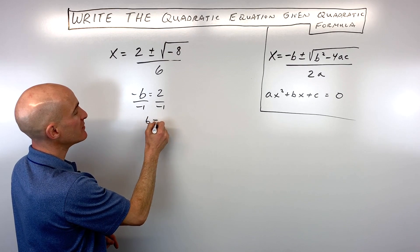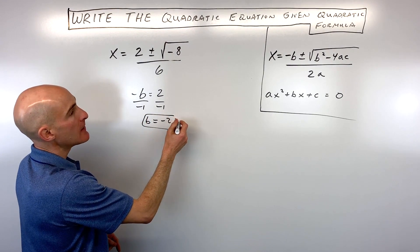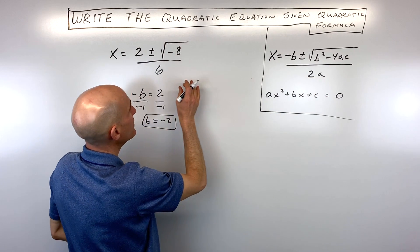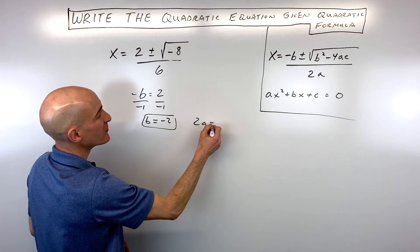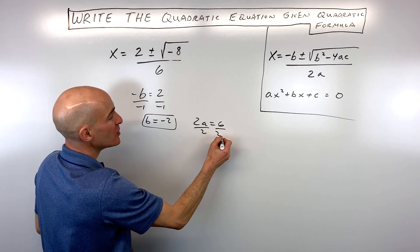Now look at the denominator. See how we have 2a equals 6? So if we divide both sides by 2, you can see that a is equal to 3.